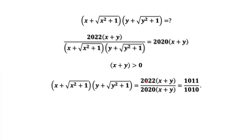We have x plus y in the denominator, which is bigger than 0. Therefore, we can cancel x plus y from both numerator and denominator. That gives 2022 divided by 2020, which equals 1011 divided by 1010. That's all. Thanks for watching, and see you next time.